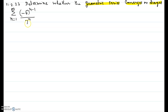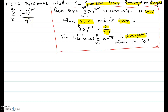The geometric series in the form sigma a times r to the n minus 1, where n varies from 1 through infinity — which when expanded is a plus ar plus ar squared and so on — is convergent when the absolute value of the common ratio r is less than 1.